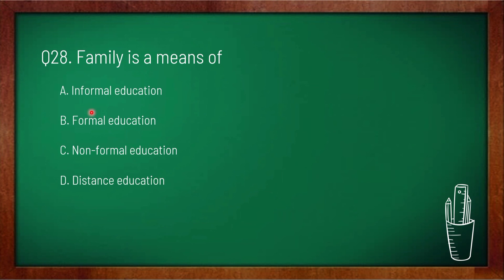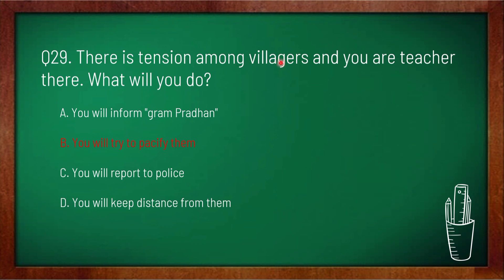Question 28: family is a means of — option A: informal education, option B: formal education, option C: non-formal education, option D: distance education. Option A is correct — family is a means of informal education. Question 29: there is tension among villagers and you are a teacher there — what will you do? Option A: inform the village head, option B: try to pacify them, option C: report to police, option D: keep distance from them. Option B is correct — you will try to pacify them.